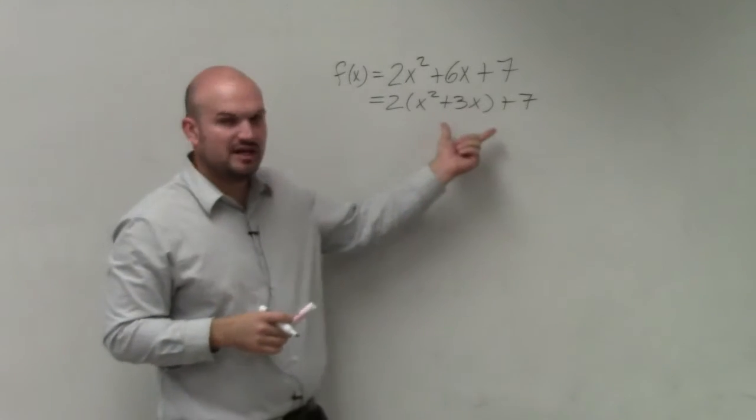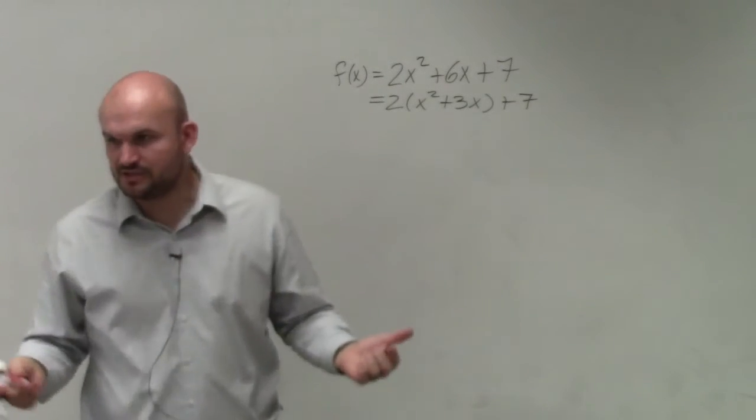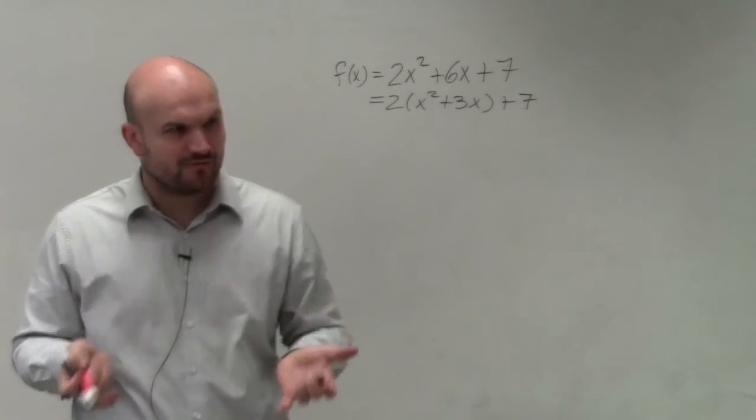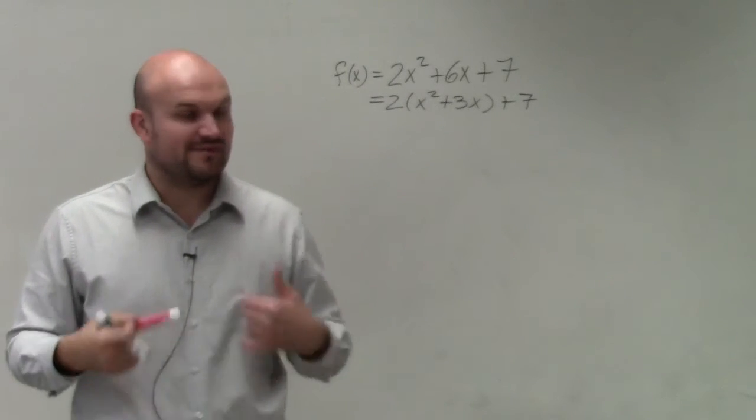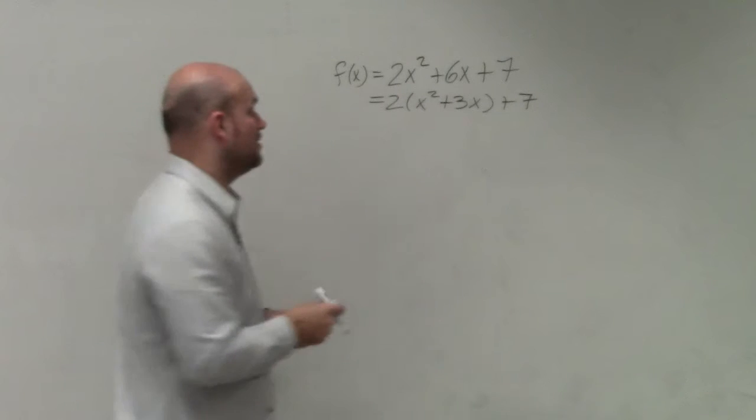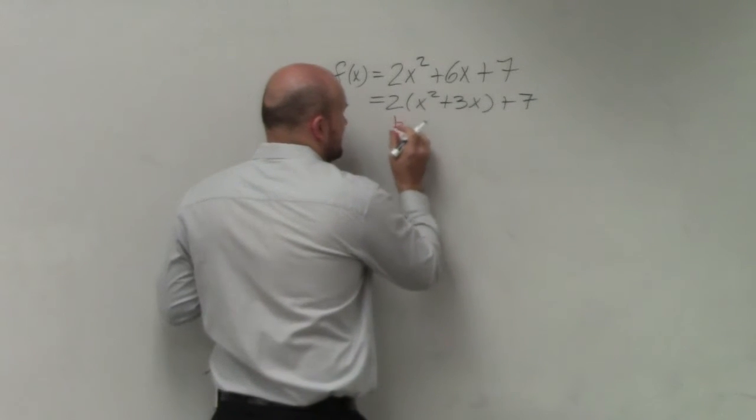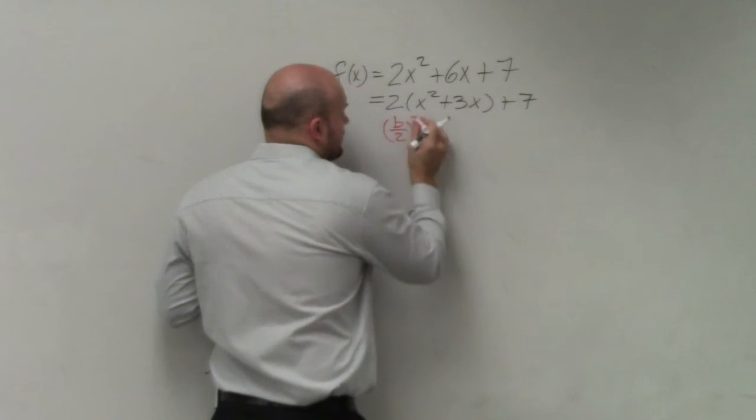Now, I'm just going to factor it out of the first two terms. Again, the goal of completing the square is to create a perfect square trinomial. So we have to create a perfect square trinomial. To do that, what we do is we take b, divide it by 2, and we square it.